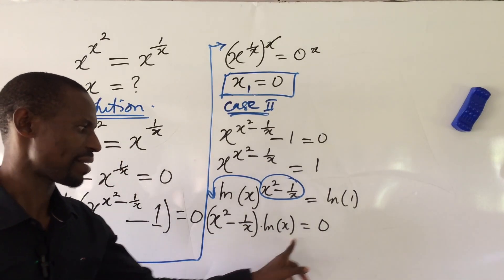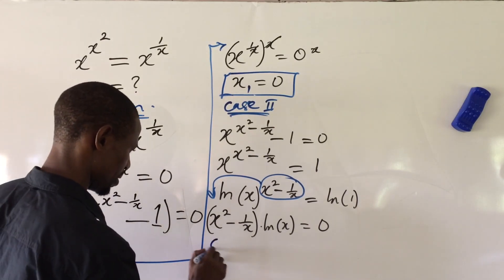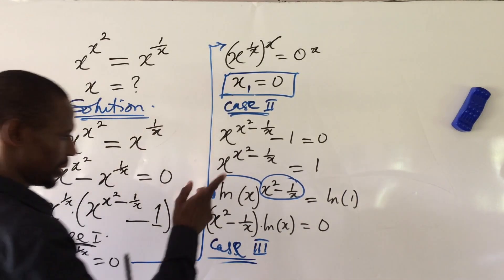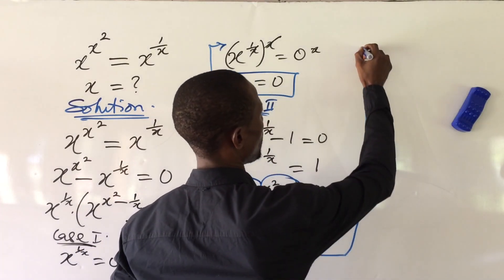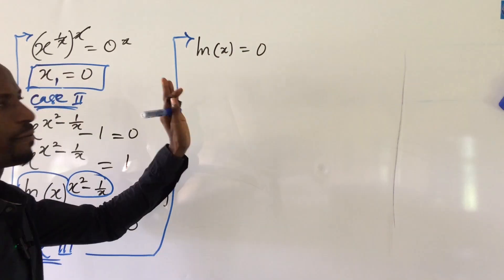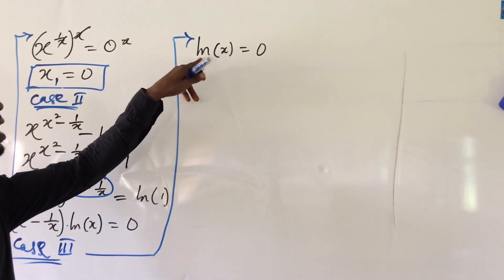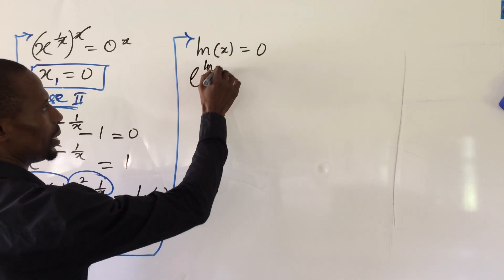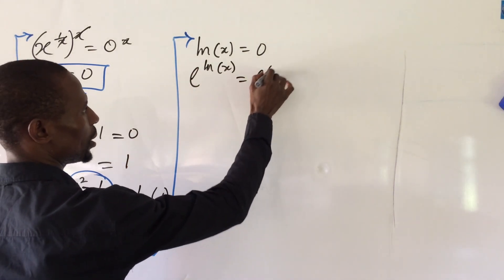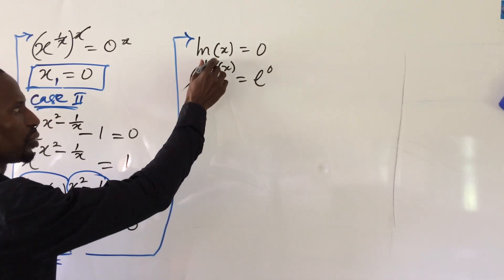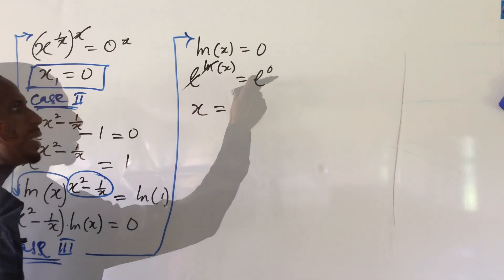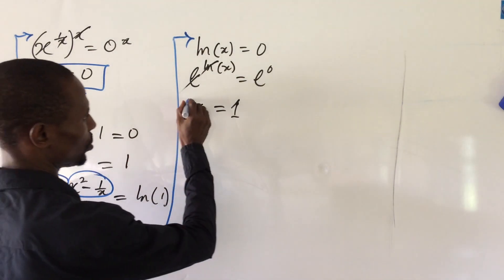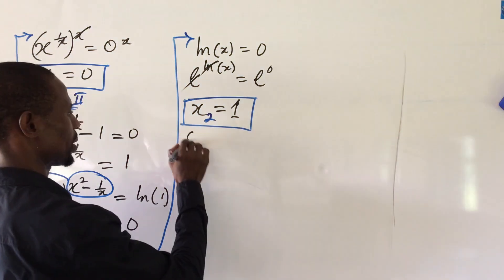We have the zero product rule again: we equate each factor to zero. Case 3: ln(x) equal to zero. To eliminate the ln, we raise both sides as a power of e: e to the power of ln(x) equal to e to the power of 0, which gives x equal to 1. So x = 1 is another root of our exponential equation.